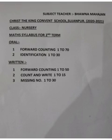And in the written part, there are three topics: forward counting 1 to 50, count and write 1 to 15, and missing number 1 to 30. Children, you have to study according to this. I will meet you in the next video. Till then, bye-bye.